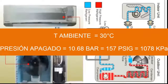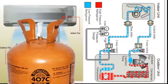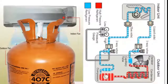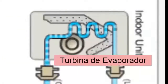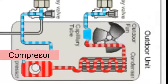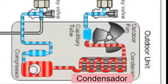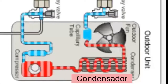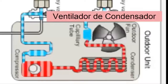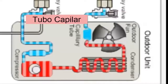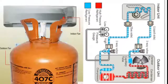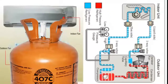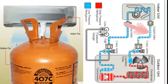The parts of an air conditioner that works with refrigerant gas are the same as conventional equipment. In the indoor unit, located inside the space, we have the evaporator and the evaporator turbine. In the outdoor unit, located outside, we have the compressor, condenser, condenser fan, and capillary tube. We also have the pipes that connect the outdoor and indoor units: the liquid line and the steam line.